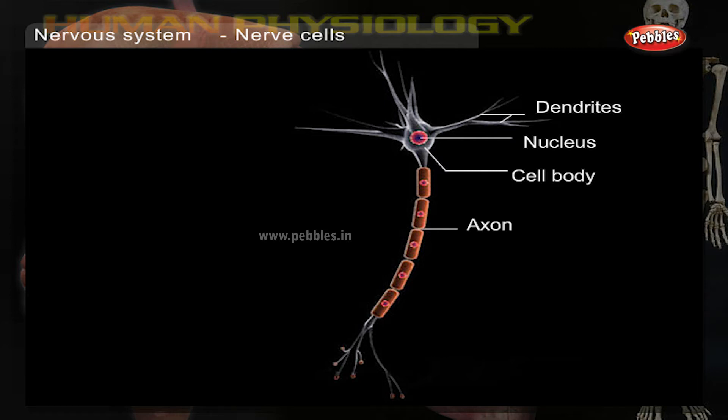The axon, or nerve fibre, varies in length from a millimeter to a meter and conducts outgoing signals emitted by the neuron. Axons are encased in a fat-like sheath called myelin, which acts like an insulator and, along with nodes of Ranvier, speeds impulse transmission.